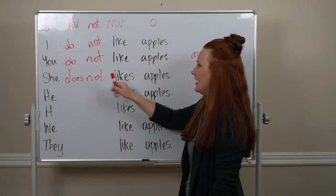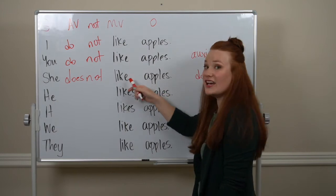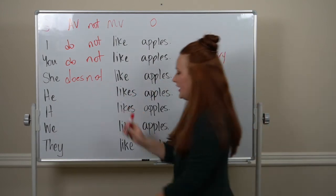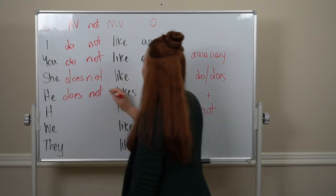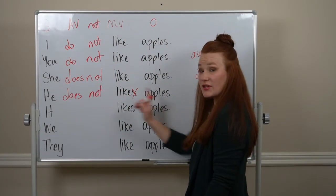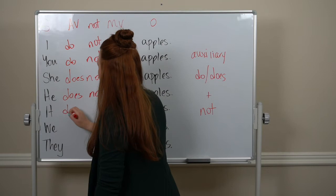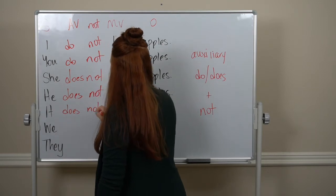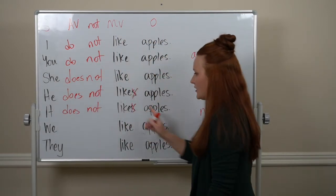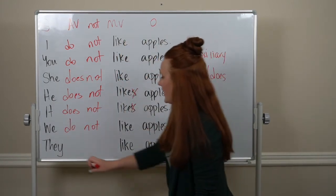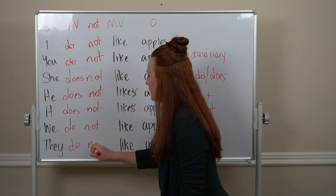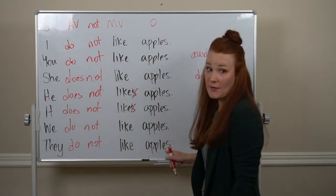So, she does not like apples. He does not like apples. It does not like apples. We do not like apples, and they do not like apples.